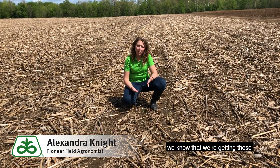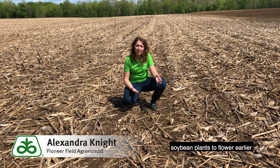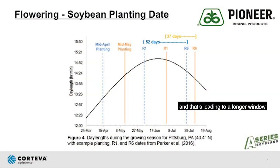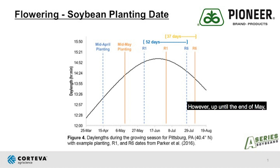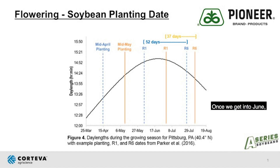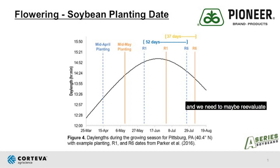As we talk about early planting, we know that we're getting those soybean plants to flower earlier, and that's leading to a longer window to accumulate that yield — so that period from the start of flowering to the end of pod fill becomes a little wider. However, up until the end of May we can probably stick with that original plan. Once we get into June, that's when we need to start re-evaluating those populations and variety choices as well.